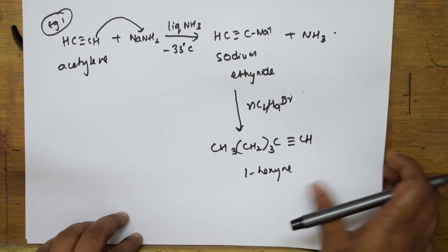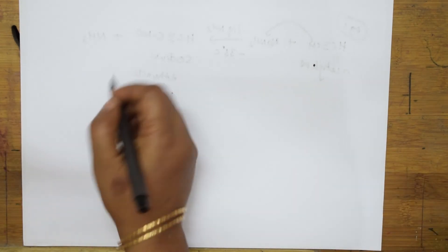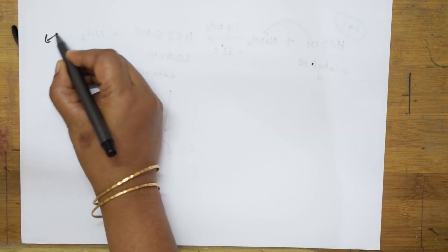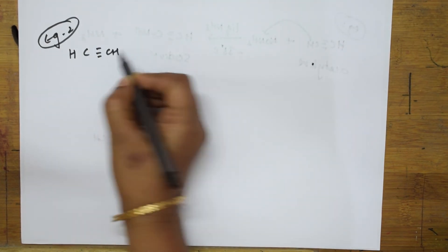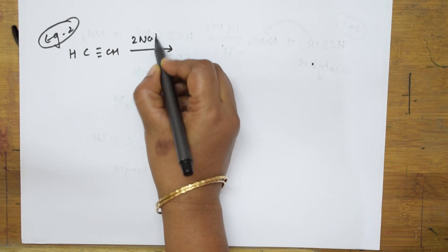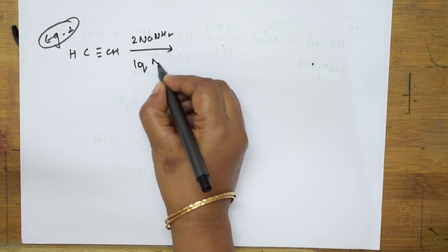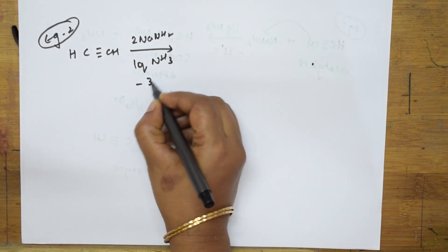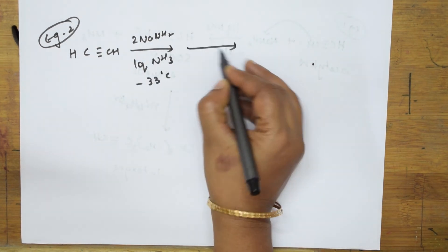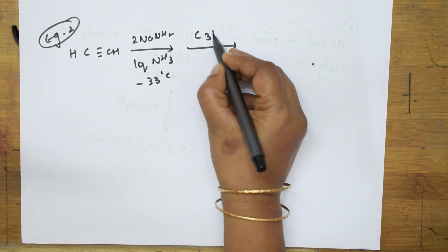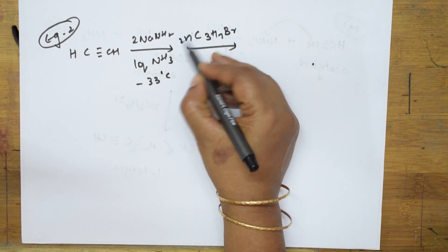Let me see one more example with the same thing. Example 2: I'm adding the same thing again - 2 sodium amide, then liquid ammonia, then minus 33 degrees. Now I'm going to add C3H7Br, which is propyl bromide - 2 moles.